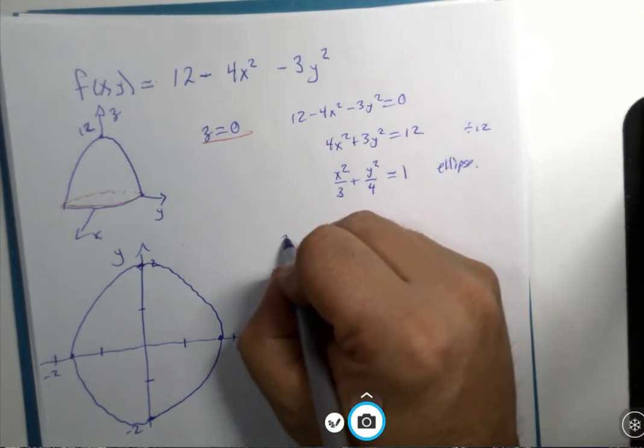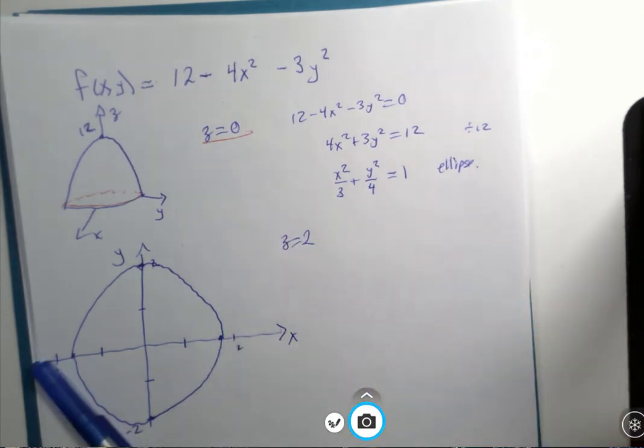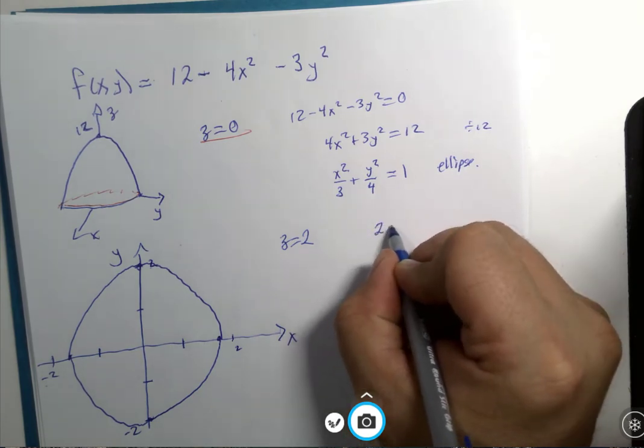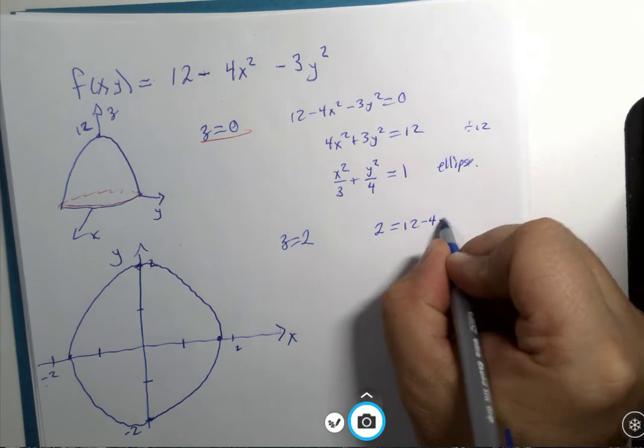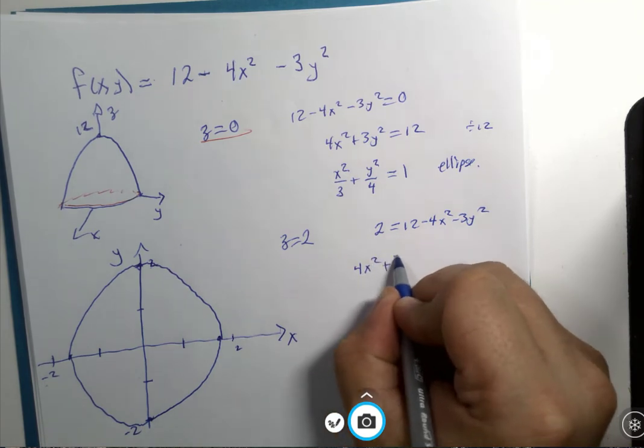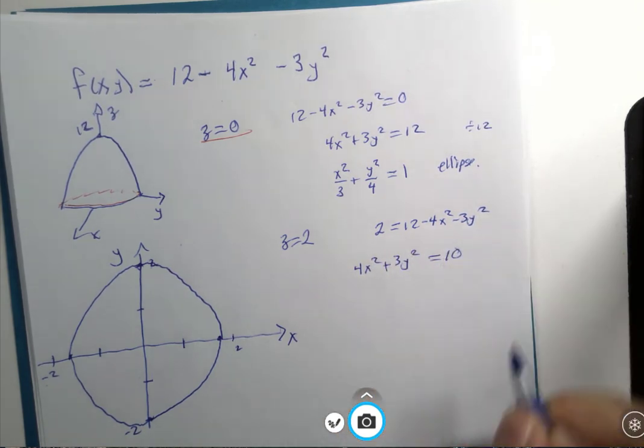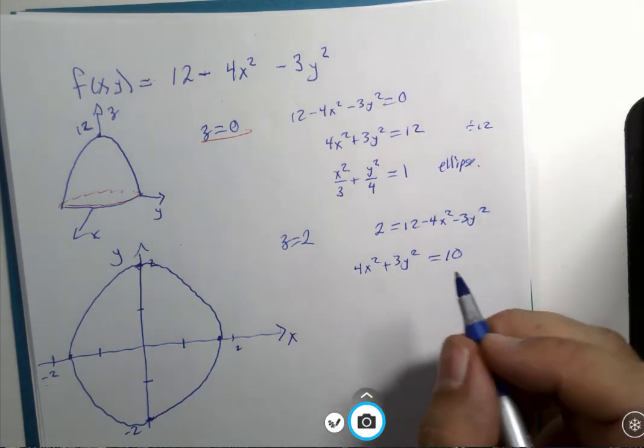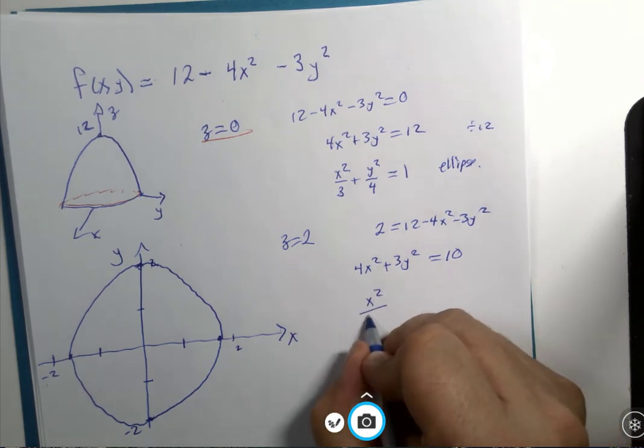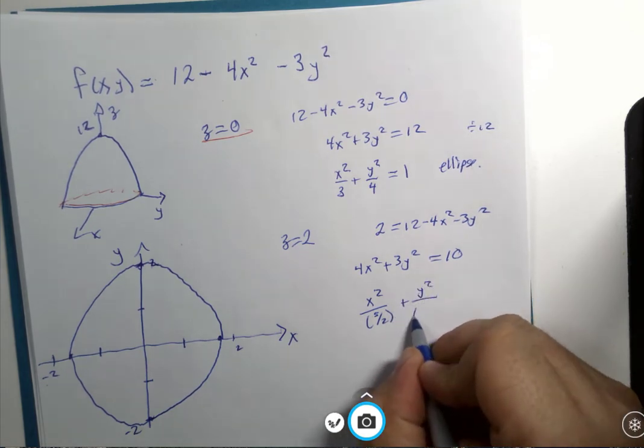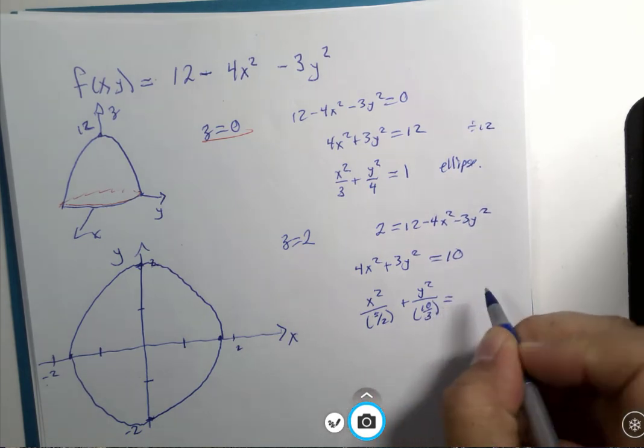If I were to let z equals two and try it again from there, I would have 2 equals 12 minus 4x squared minus 3y squared, add terms over, subtract the two, divide by ten, it's x squared over five halves and y squared over ten thirds.